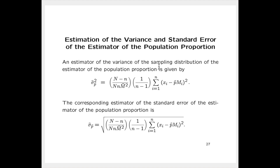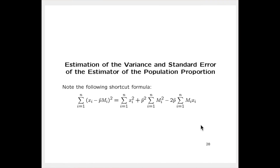We'll look at a shortcut formula for calculating that on the next slide. Once we have the estimated variance of p-hat, we take its square root to get the estimated standard error, shown at the bottom of slide 27. The shortcut formula for the sum of squared deviations between the x sub i's and p-hat times cap M sub i is given by the expansion formula on slide 28. It involves the sum of the squared x's, the squared p-hat, the sum of the squared cap M sub i's, and the sum of the cap M sub i's times the x sub i's—all summary statistics needed to efficiently calculate the sum of squared differences.